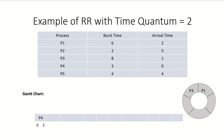In this video we are going to discuss an example of round robin process scheduling with a time quantum of two time units. Here are five processes whose burst time and arrival times are given to us.